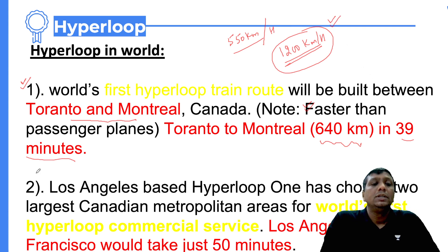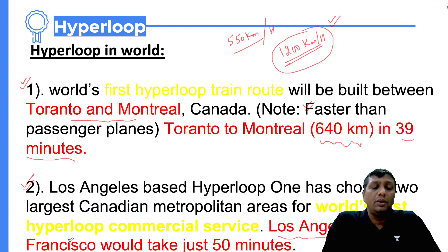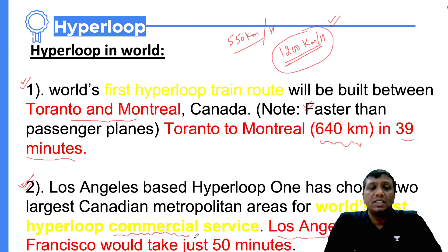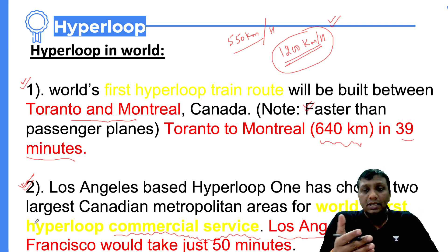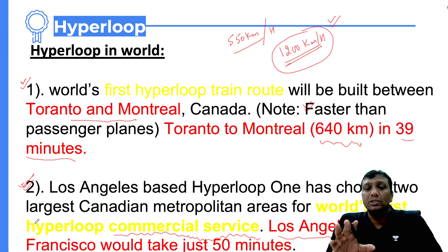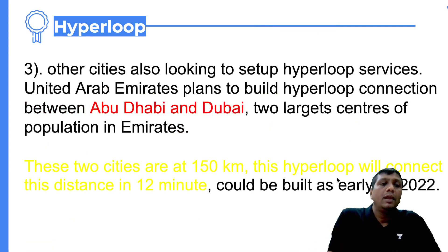The first commercial hyperloop service is planned between Los Angeles and San Francisco, and the journey will complete in just 50 minutes. Los Angeles and San Francisco are the two largest metropolitan areas considered for this route. This was originally a project proposed by Elon Musk as the first major commercial hyperloop trade.